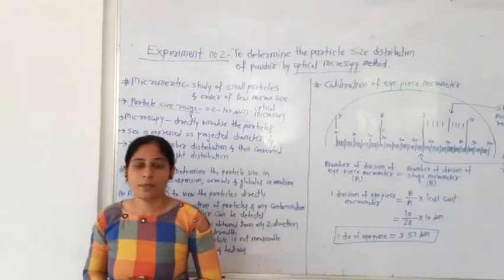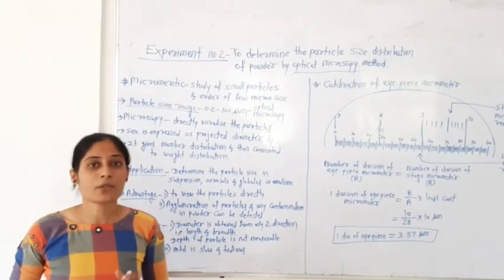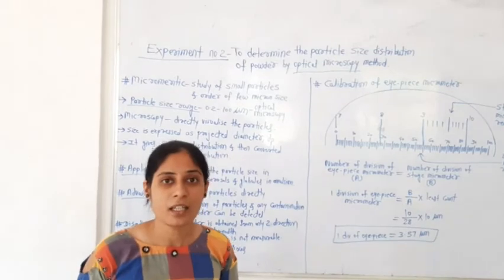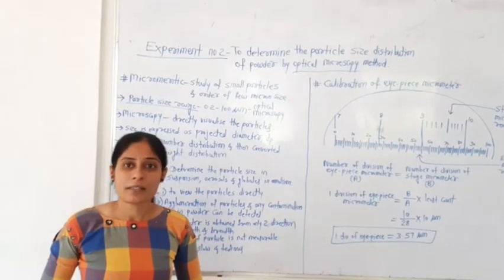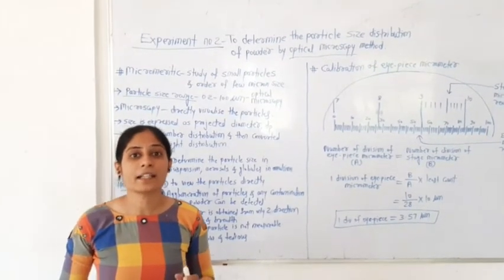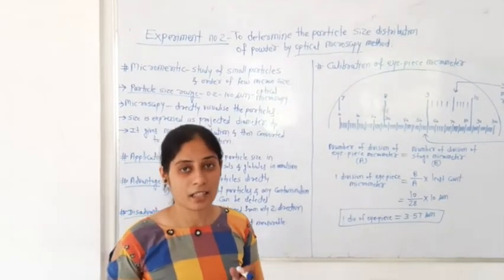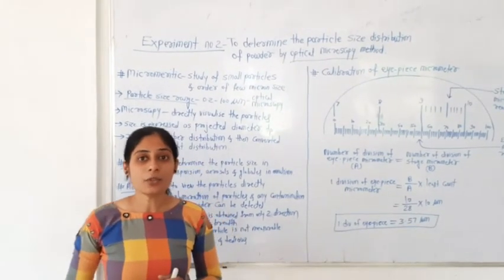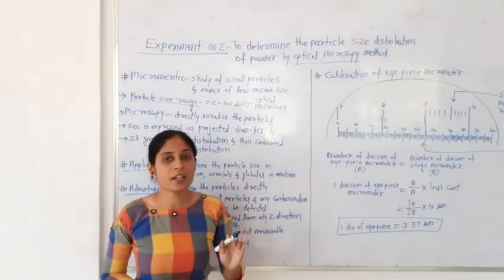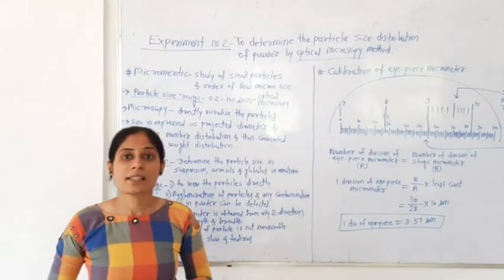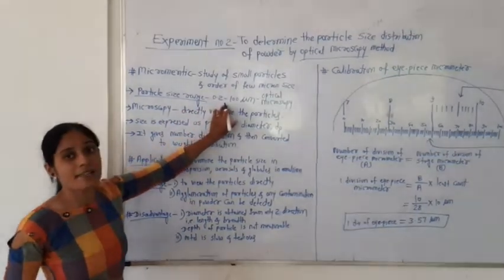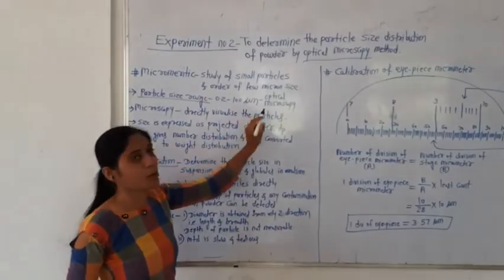In today's practical we will use the optical microscopic method. But in the last experiment, that is experiment number 1, we used the sieving method. By the sieving method we can determine the particle size, and in the sieving method the particle size range should be 50 to 1500 micrometers. But in the optical microscopic method, the particle size is really small — the range should be 0.2 to 100 micrometers.